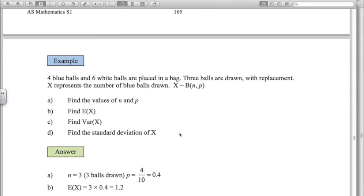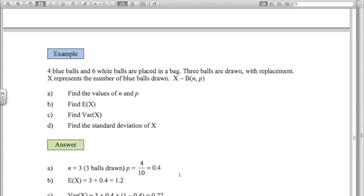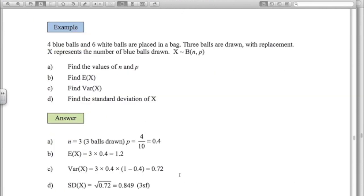Expected value of X: n times p, three times 0.4 which is 1.2. And the variance of X: n times p times one minus p, 0.72. The standard deviation of X is the square root of the variance which is 0.849.